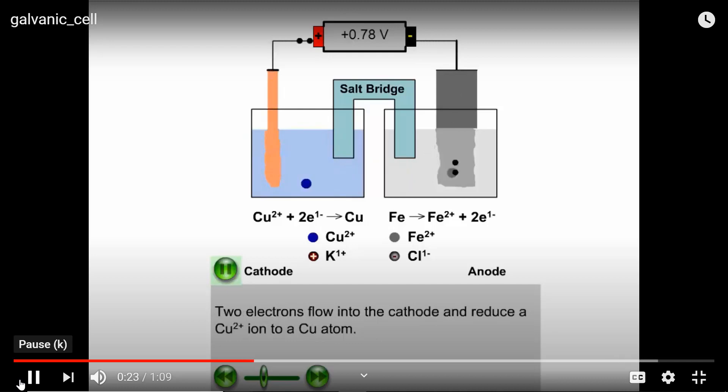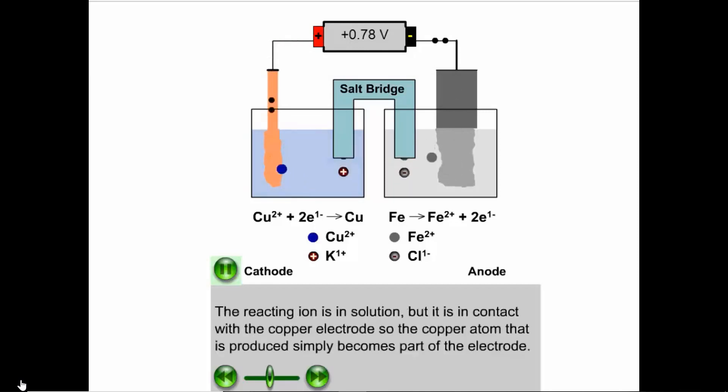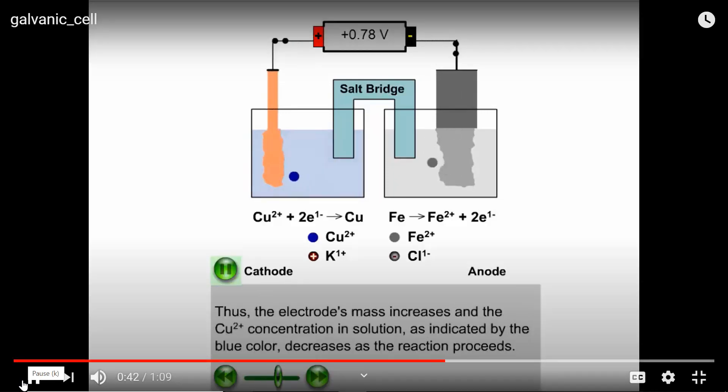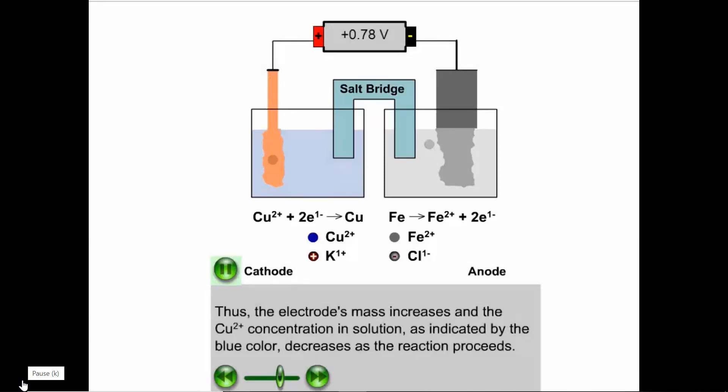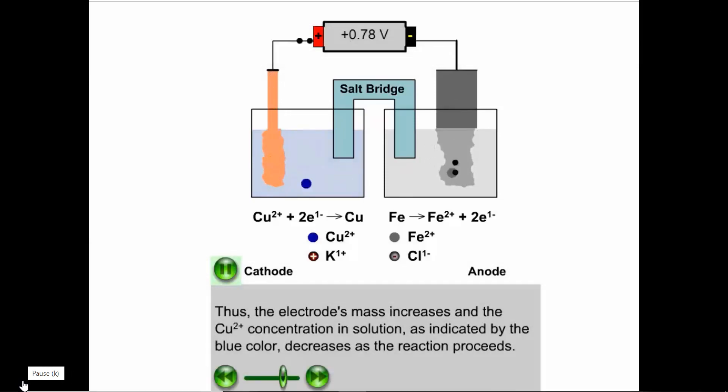Two electrons flow into the cathode from the electrical circuit and reduce a copper 2+ ion to a copper atom. The reacting ion is in solution, but it is in contact with the copper electrode, so the copper atom that is produced simply becomes part of the electrode. Thus, the electrode's mass increases and the copper 2+ ion concentration in solution, as indicated by the blue color, decreases as the reaction proceeds.